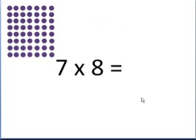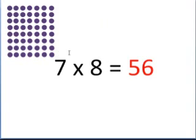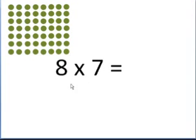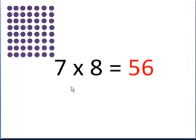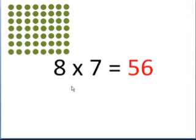Here we have 7 times 8. I have a block of 7 times 8 dots, so 7 times 8 is equal to 56. If you counted them all, you would find 56 dots. And 8 times 7 is different than 7 times 8, but ultimately it's still 56, because now we're adding 8 groups of 7.